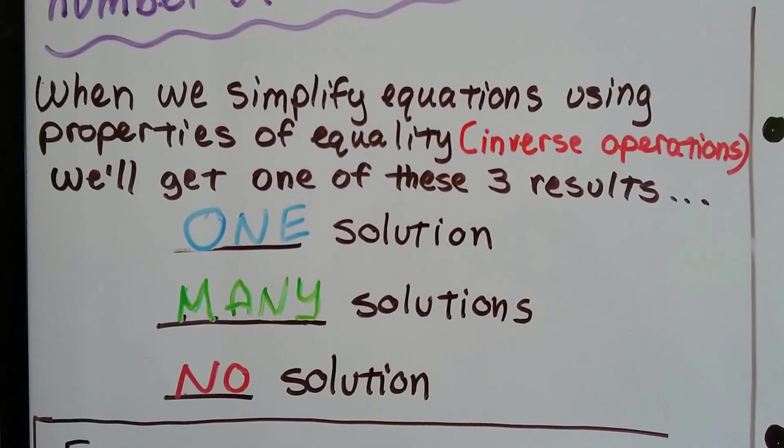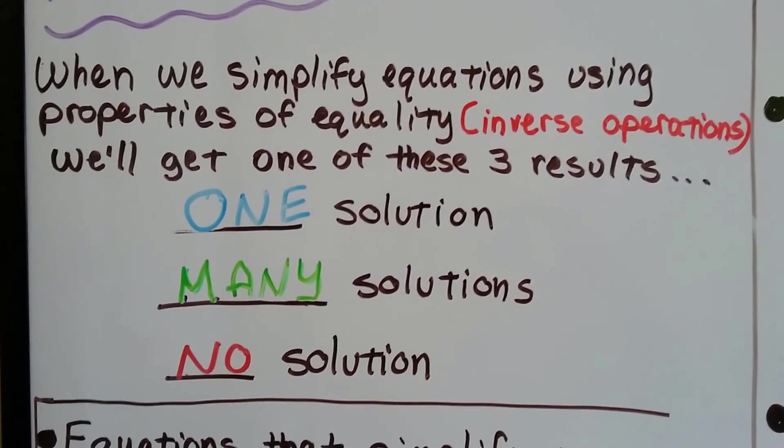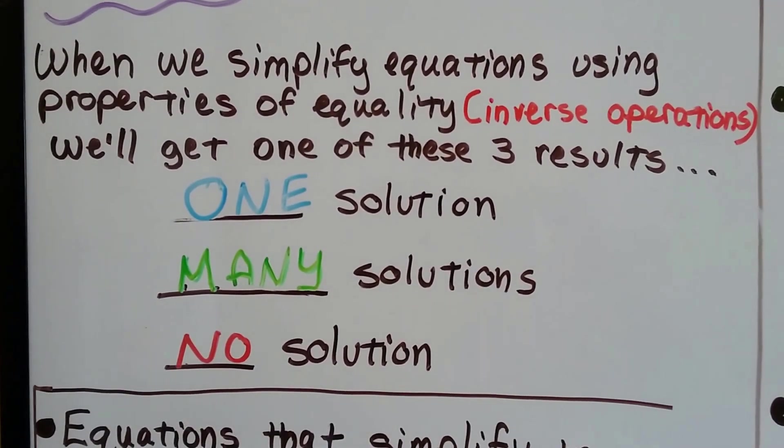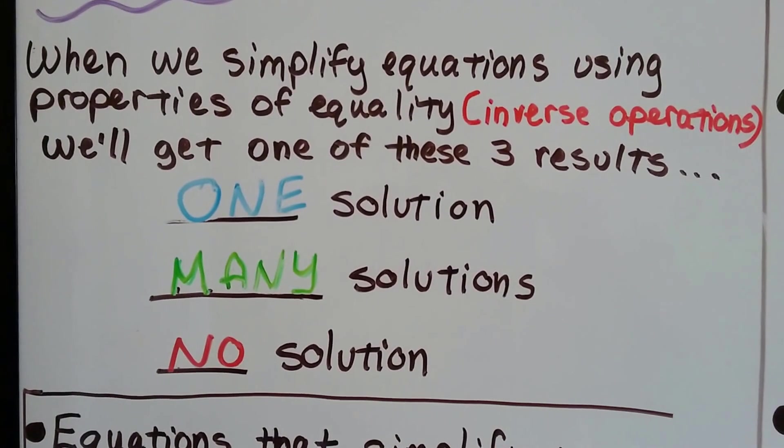Those are the inverse operations. We get one of these three results: one solution, many solutions, or no solutions. It's going to be one of those three.